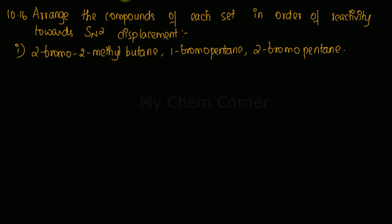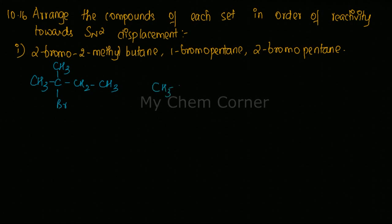Just by looking at the name you won't identify these easily, so first draw the structures. For 2-bromo-2-methylbutane, the parent is butane with a methyl and bromo group at the second carbon: CH3-C(CH3)(Br)-CH2-CH3. For 1-bromopentane, it's a five-carbon chain with Br on position one: CH3CH2CH2CH2CH2Br. For 2-bromopentane, Br is on carbon number two.